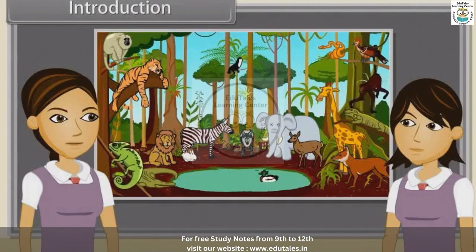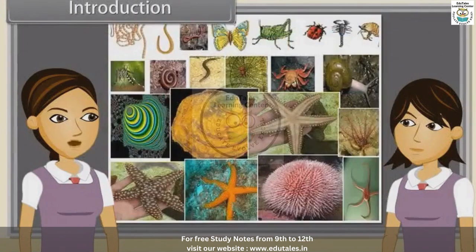Now we are going to discuss characteristics of Platyhelminthes, Aschelminthes, Annelida, Arthropoda, Mollusca and Echinodermata.